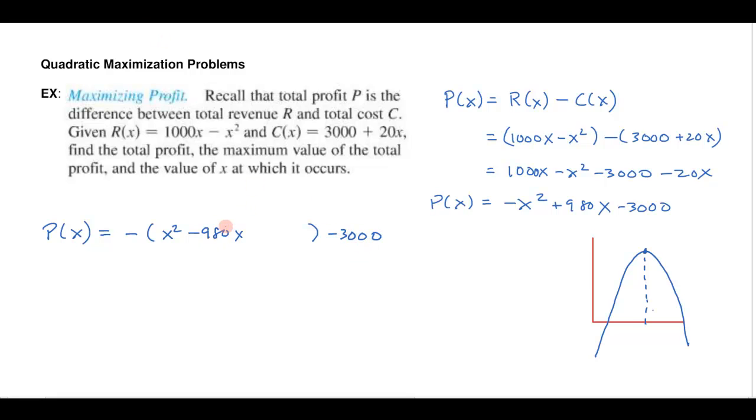And then just push the -3000 off to the side there. And then to complete the square, we take half of that middle term. Now, half of 980 is 490. So I'll take that 490 and square it. I don't know what that is. Not 490 to the zero power. 490 squared.